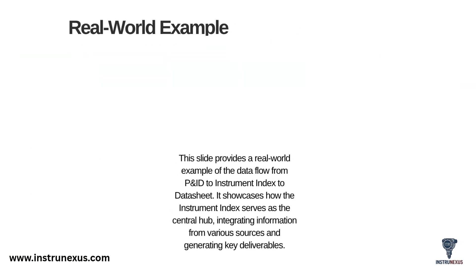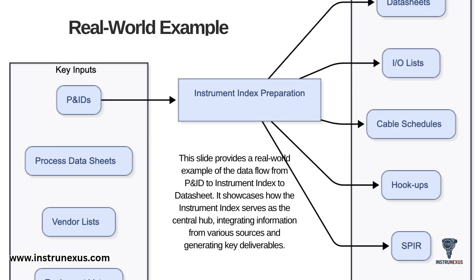Let's visualize this with a real-world example. It all starts with the P&ID — a new instrument tag is added. That tag is then entered into the instrument index, which serves as the central hub. In the index, it's populated with all its data: process, mechanical, electrical, and so on, integrating information from all those various sources. From that single entry in the index, a data sheet is generated, an I/O list entry is created, and a loop diagram is drawn. This flow — from P&ID to central index to all other deliverables — is the core concept. The instrument index is what makes this powerful integration possible.